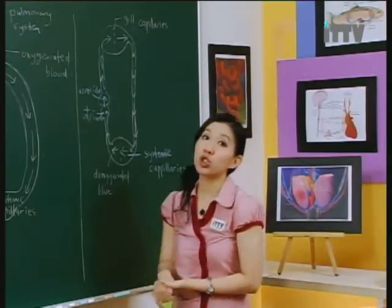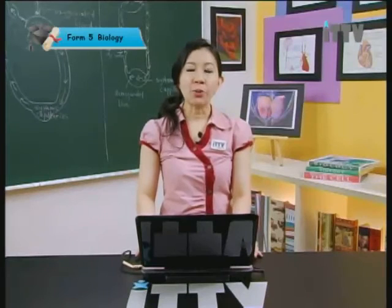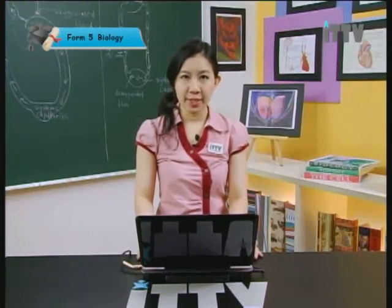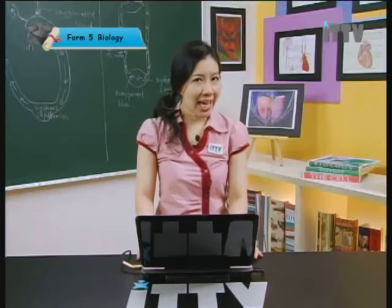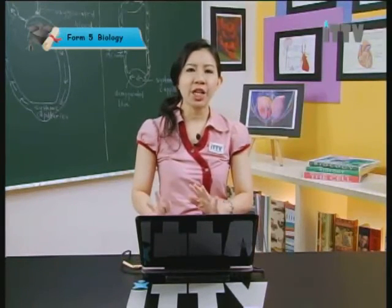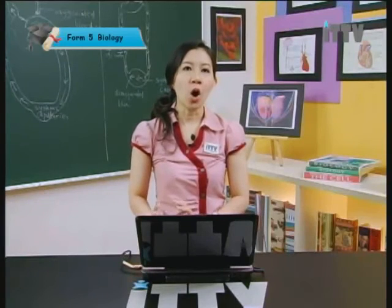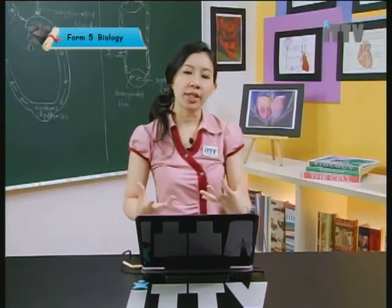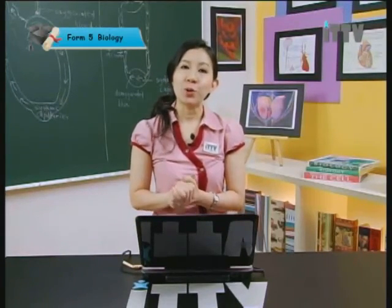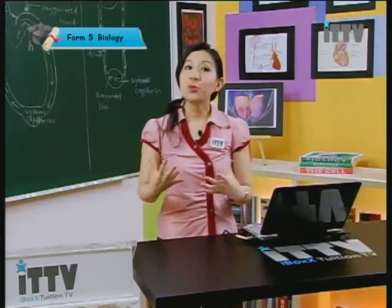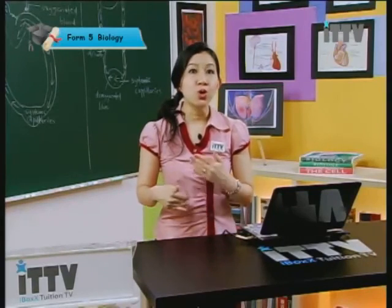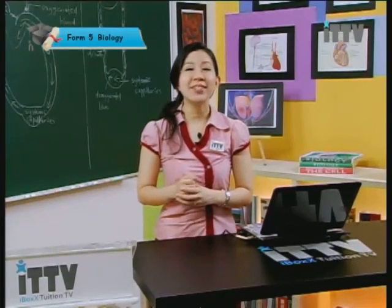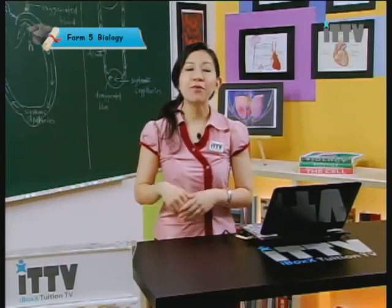We have actually finished our lesson for today on Transport. We have compared the circulatory systems between fish, amphibians and humans, conceptualised the circulatory system, and discussed the implications of hypertension and low blood pressure on human health, as well as the effects on heart contraction and relaxation. Thank you so much for watching ITTV. We hope you will continue your revision and understand the different diagrams in Chapter 1. We look forward to seeing you again next time.